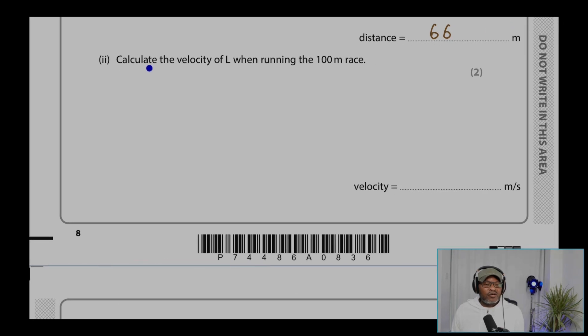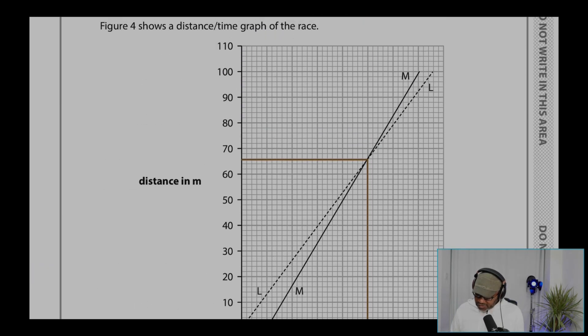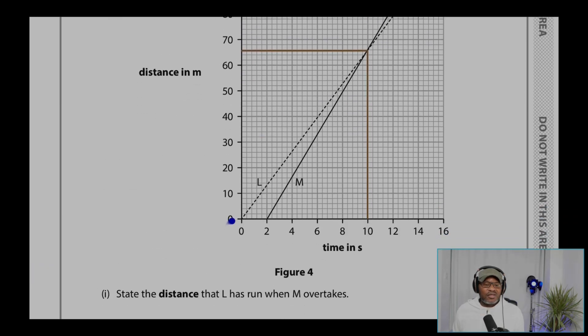Part 2. Calculate the velocity of L when running the 100 meter race. So L finishes there at 100 meters, and we have to match that with the timing.